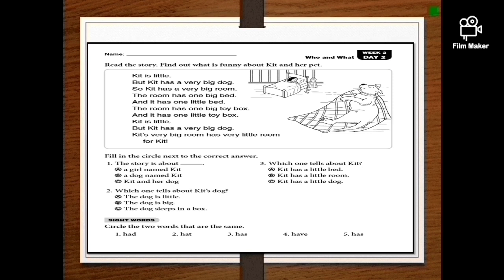So what's funny in this story? Kit is a little girl, but her dog is very big, right? And Kit has little things, but her dog has big things. Kit has a very big room, she has no space in that room. Why? Because she has to keep all these big things of her big dog.